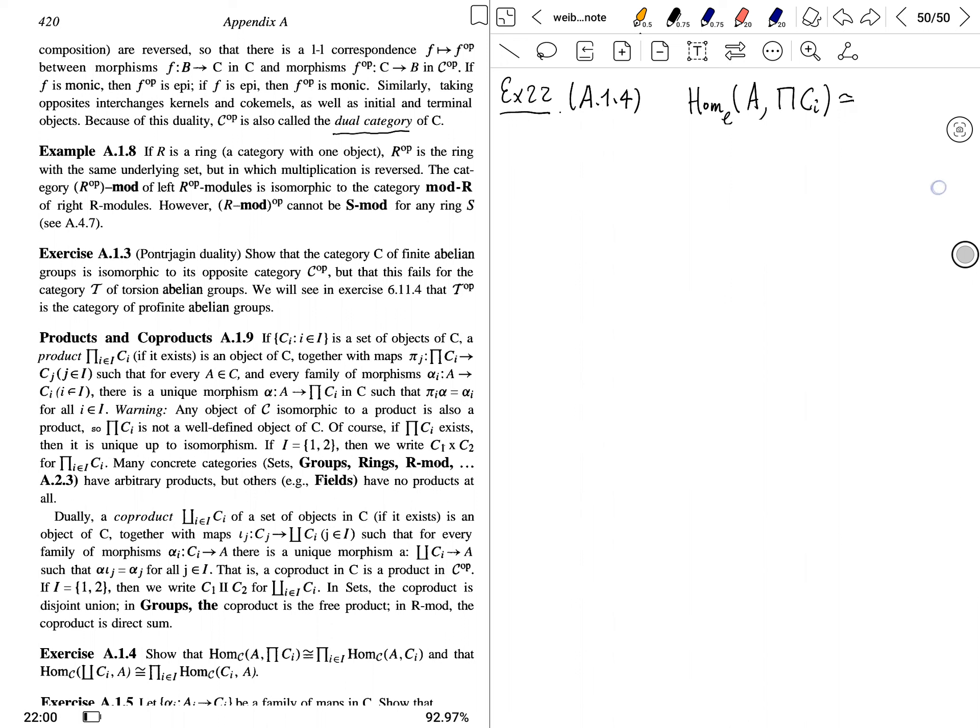On the homset, so from the category of abelian groups. Similarly, another one for coproduct. Homset of coproduct of first position isomorphic to.